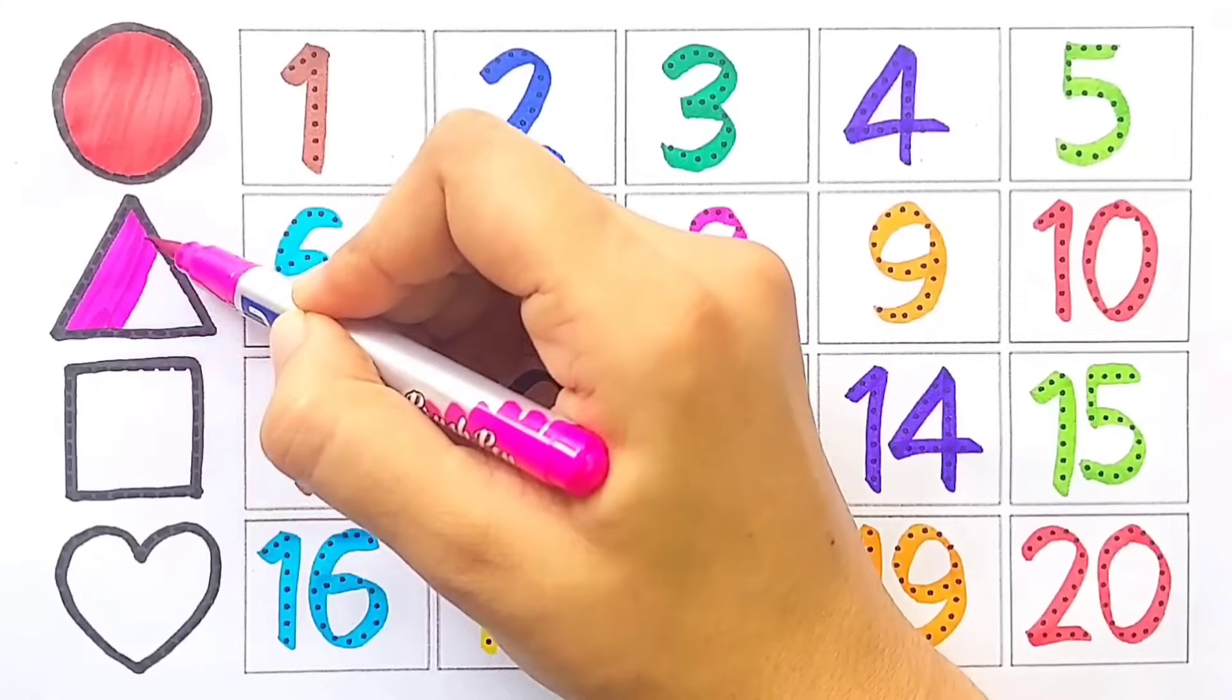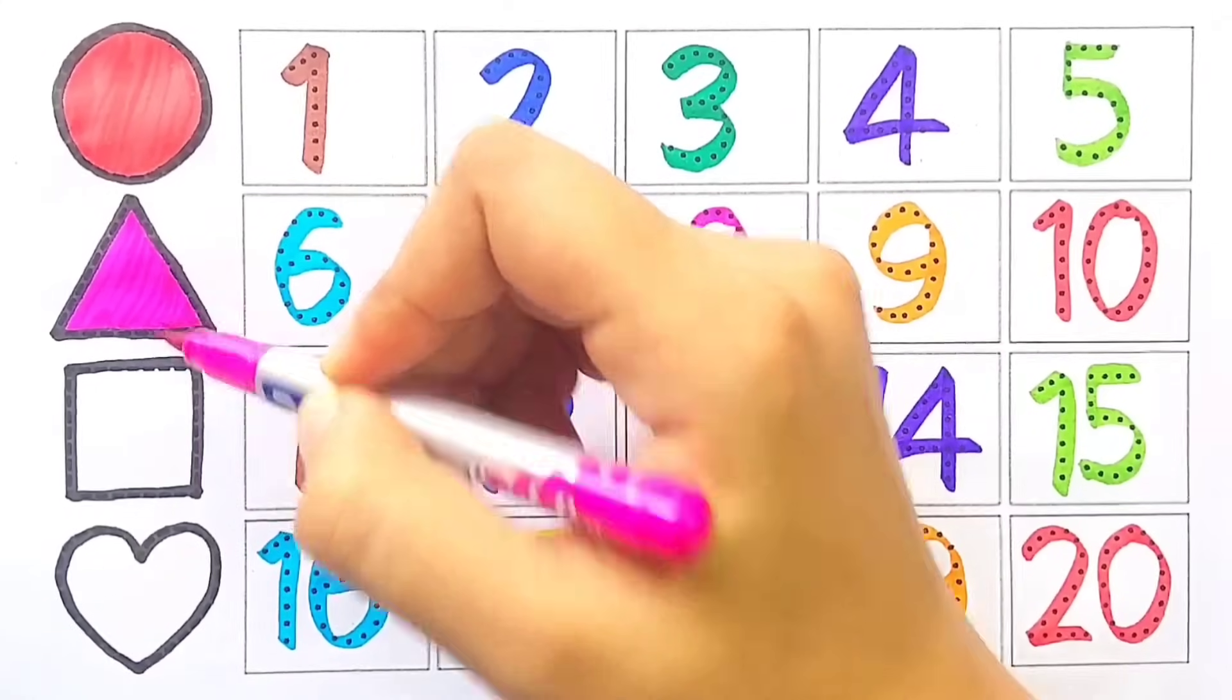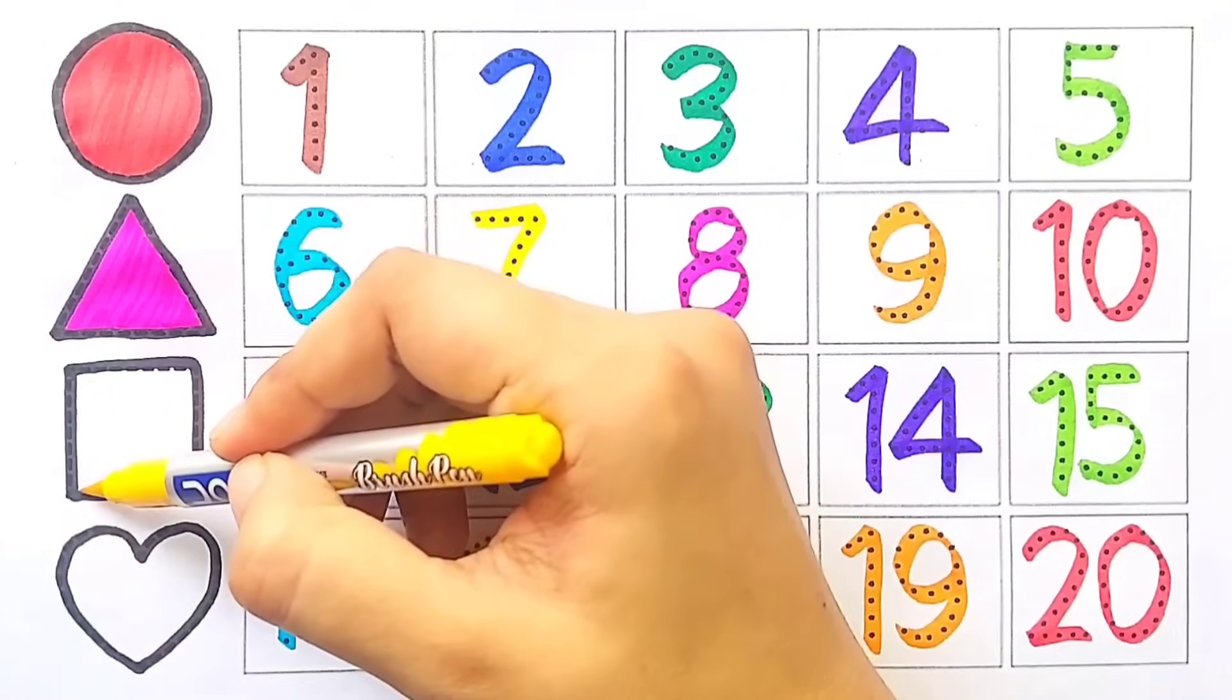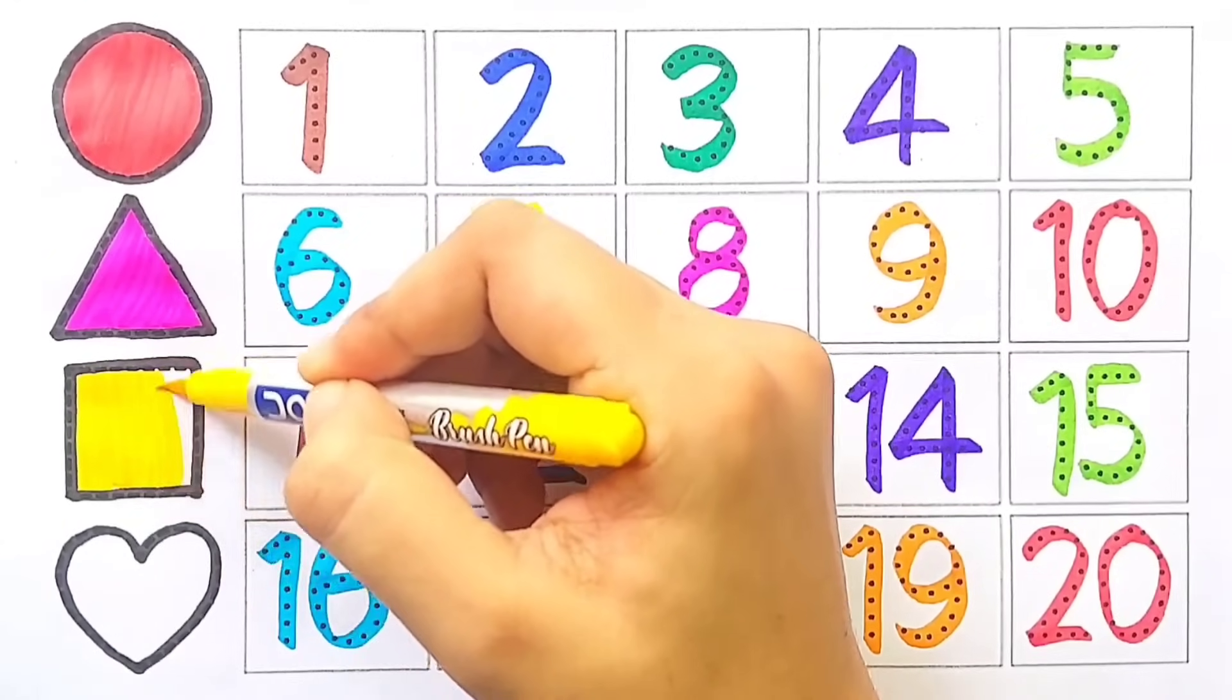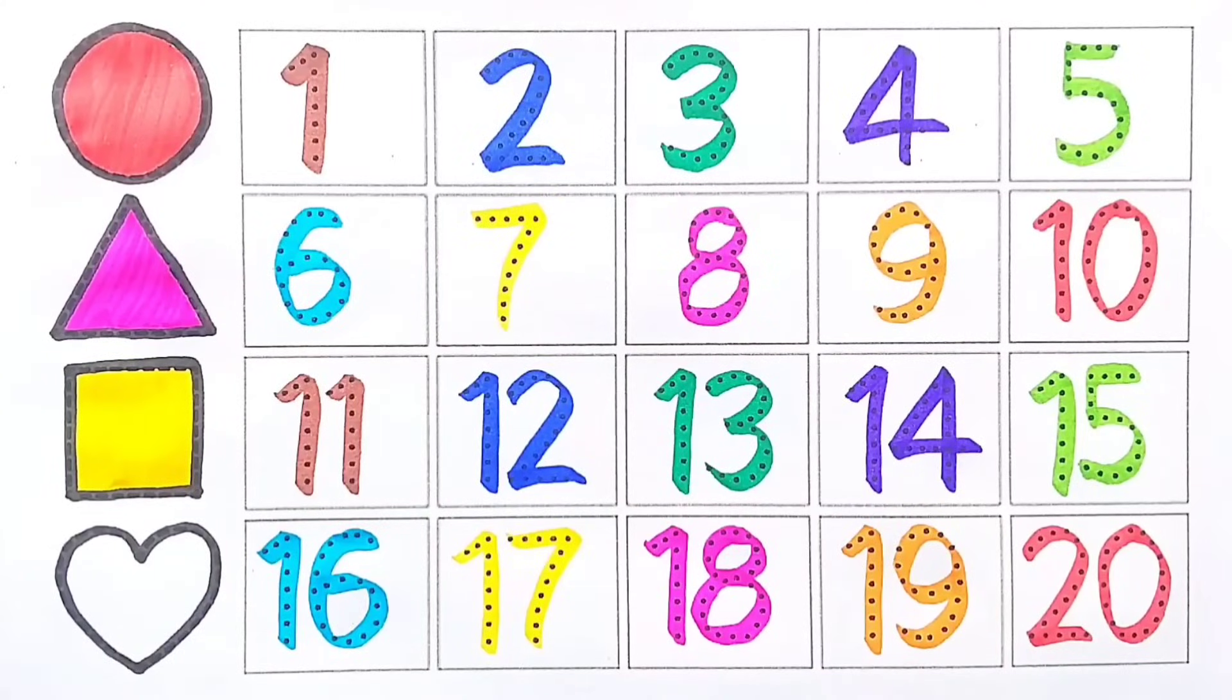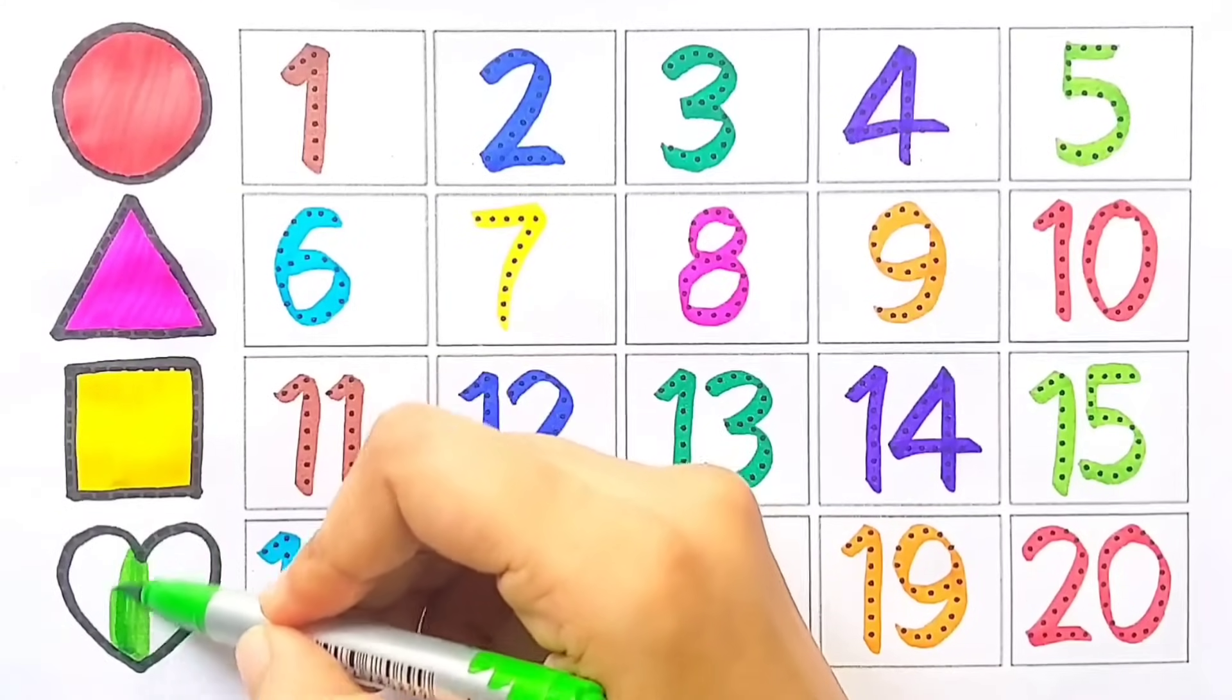Yellow color for square, light green color for heart.